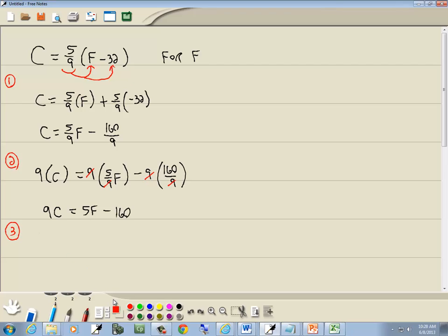Well, step three. We want to get everything with the variable we're solving for on one side, everything else on the other side. We're solving for F. So I'm going to take the negative 160 and move it to the left side. So we've got 9C plus 160 is equal to 5F.